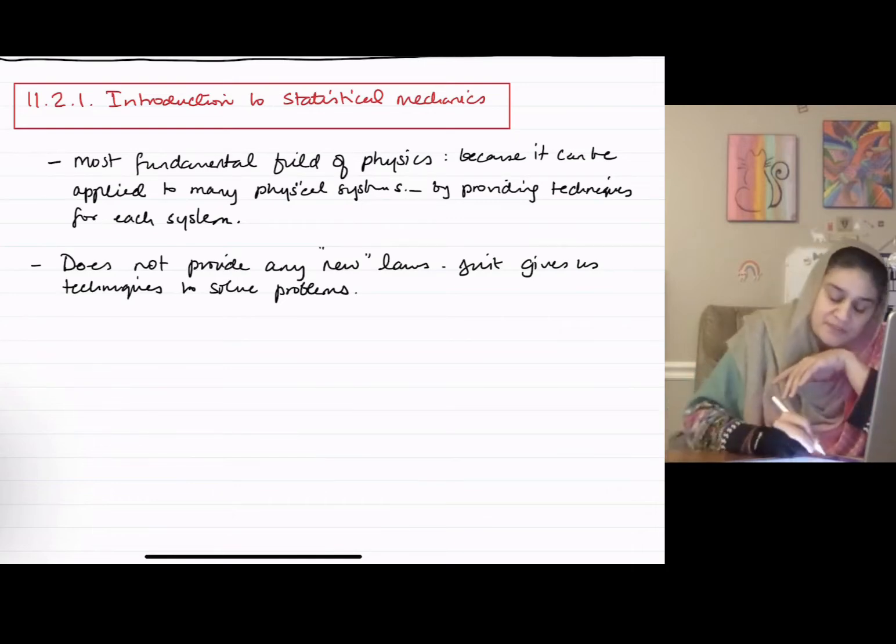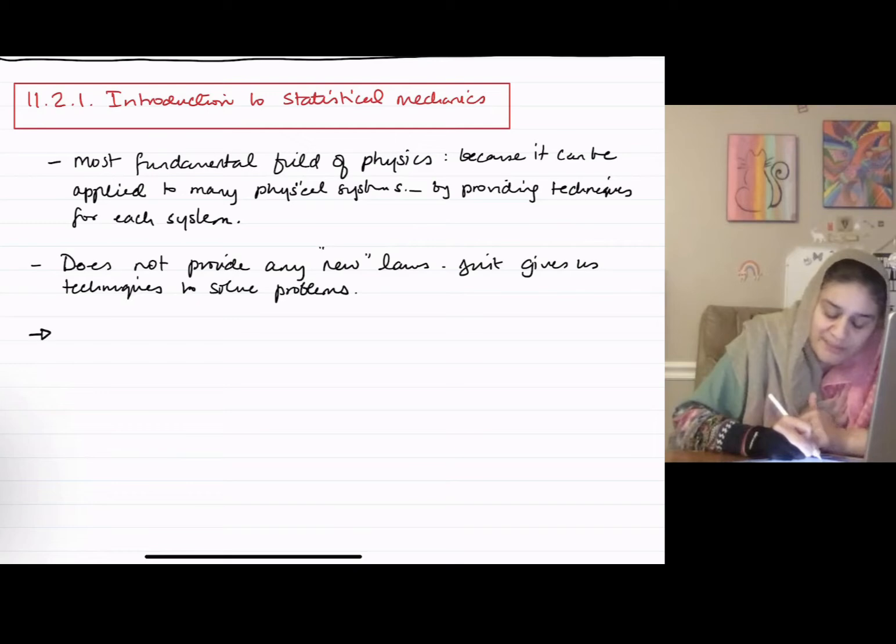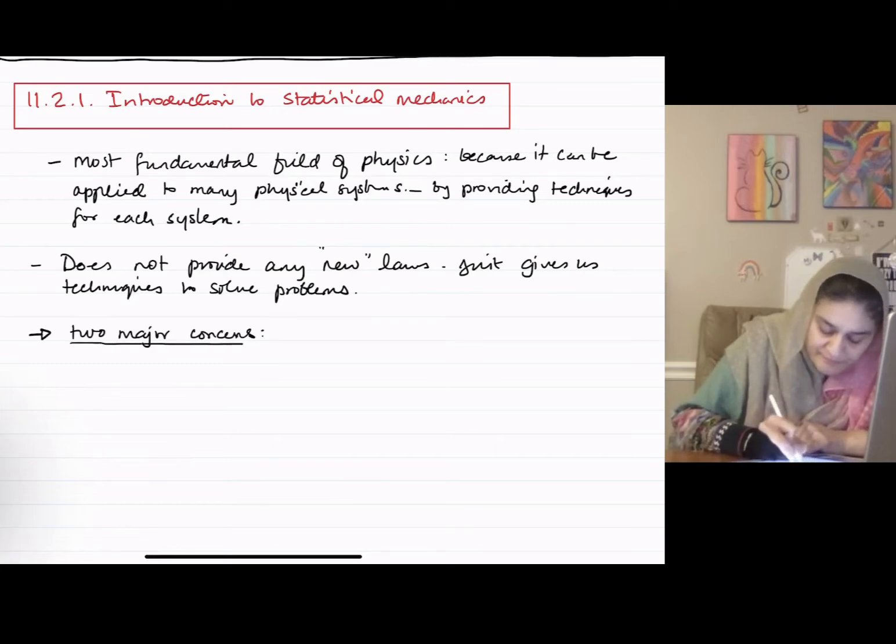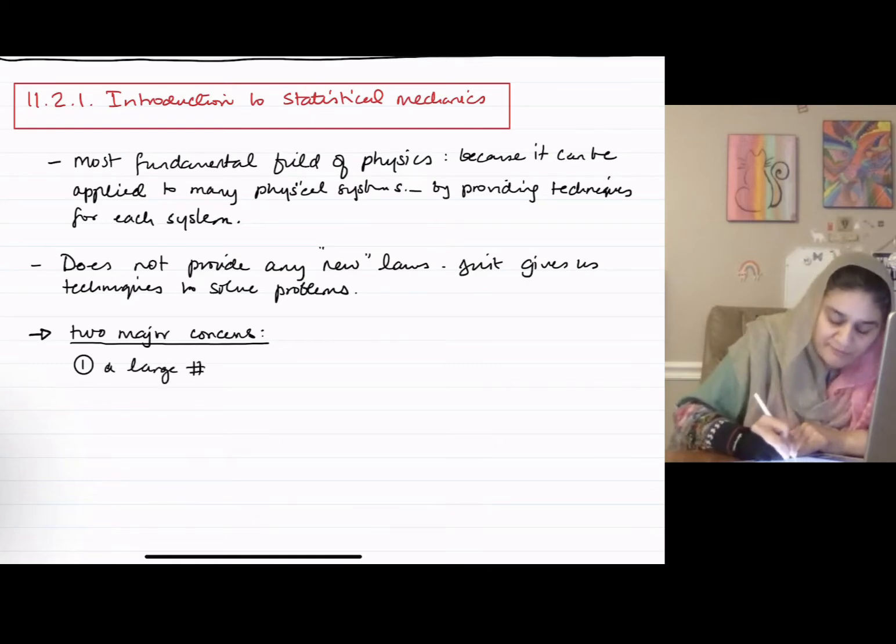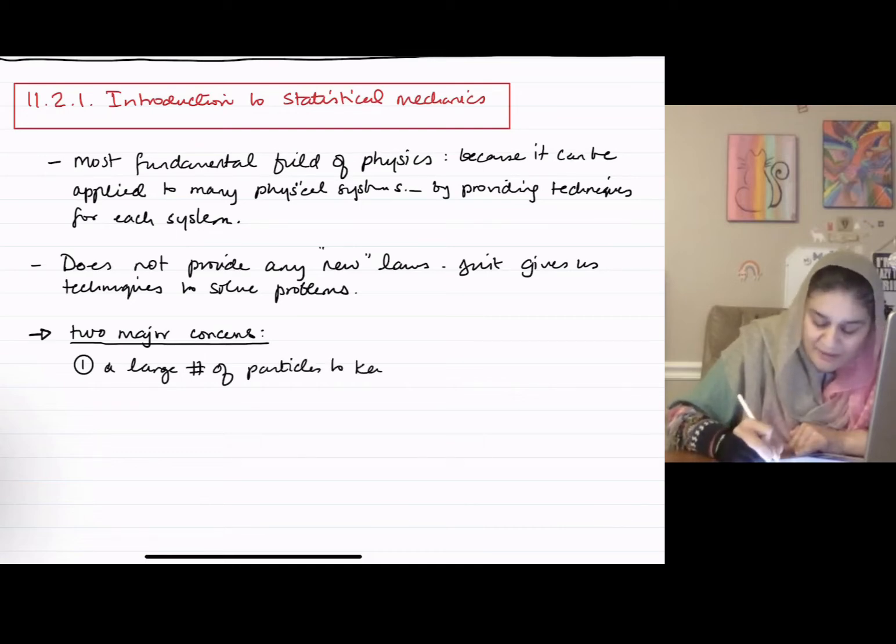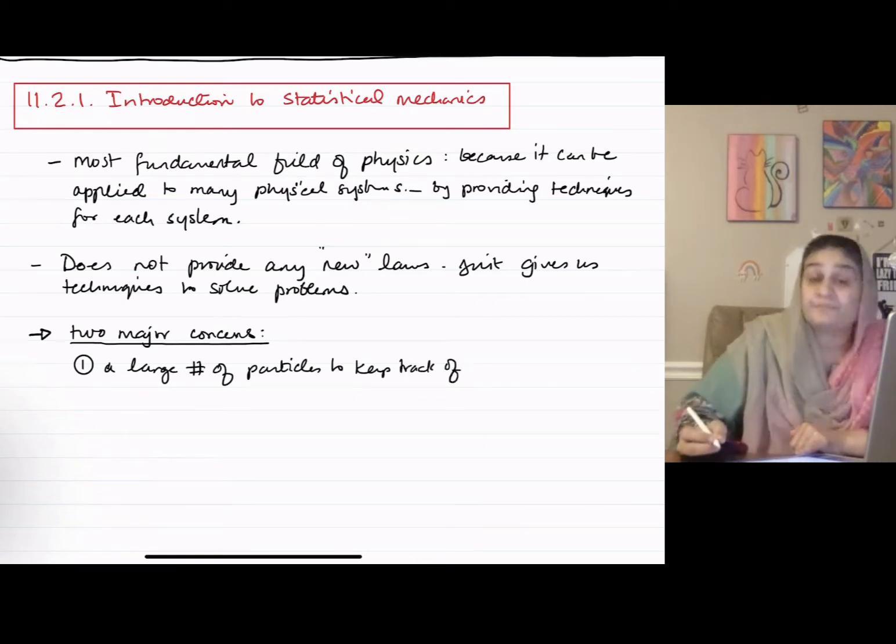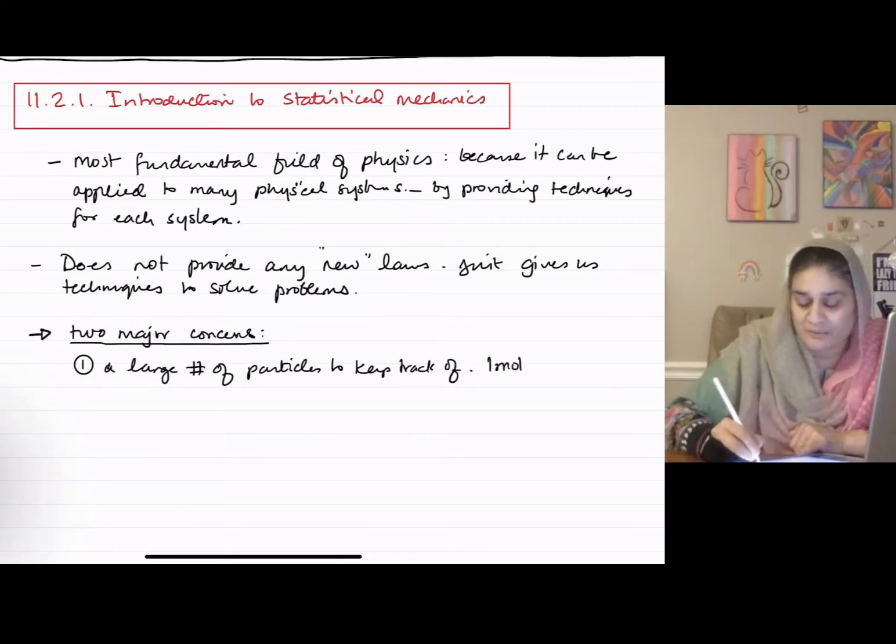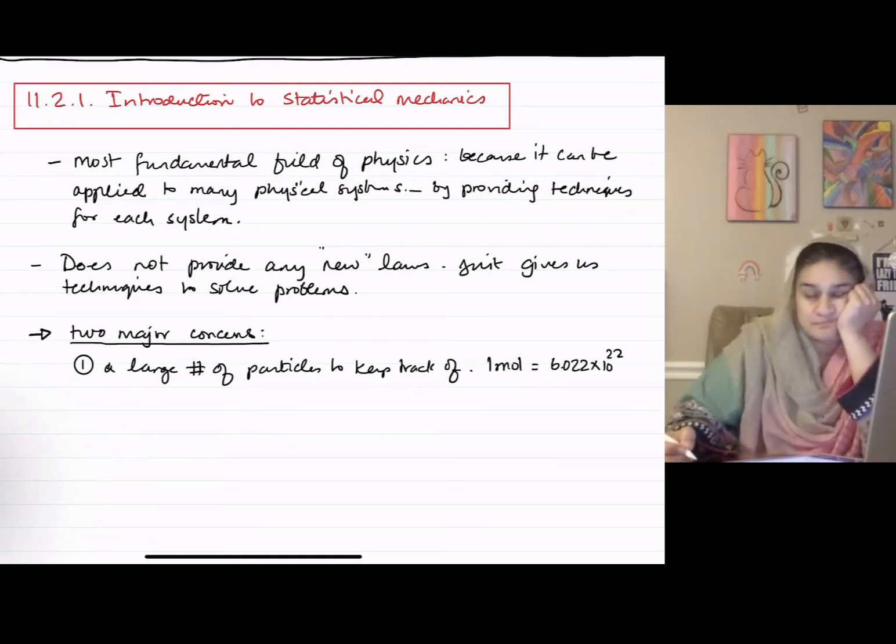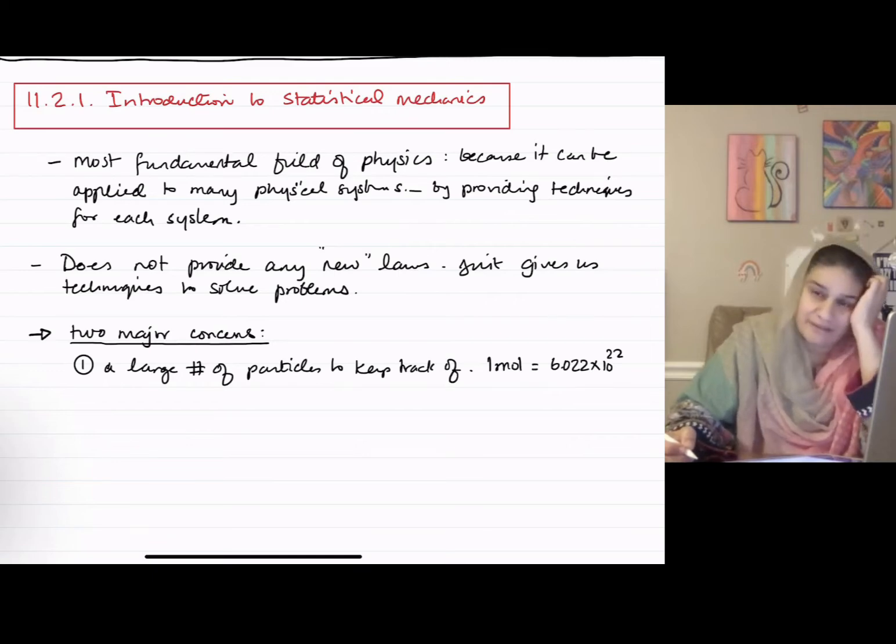So for most systems, we have two major concerns. One, a large number of particles to keep track of. For example, how many particles in one mole? Right. Can we keep track of every single one? No, right?